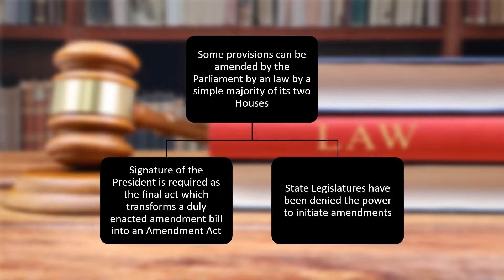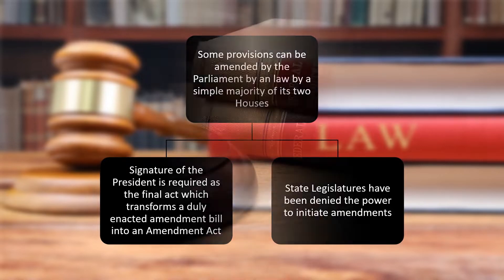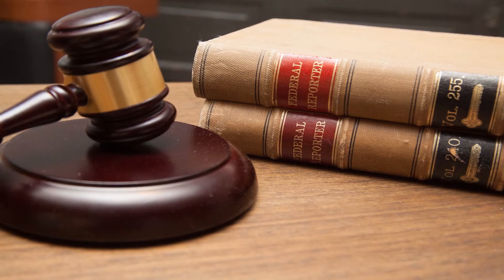The signature of the president is required as the final act which transforms a duly enacted amendment bill into an amendment act. State legislatures are denied the power to initiate amendments. All amendments are subject to the judicial review power of courts — the supreme court and state high courts — and any amendment can be declared invalid if found to be unconstitutional.